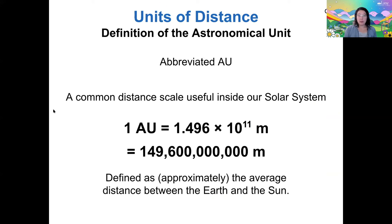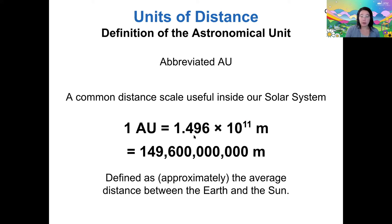That unit is called the astronomical unit. This is a really useful distance scale we'll use inside our solar system — you're probably not familiar with it because it's not very useful here on Earth. It is defined as the average distance between the Earth and the Sun. The Earth varies in distance from the Sun at different parts of its orbit, but on average it's 1.496 times 10 to the 11th power meters from the Sun.